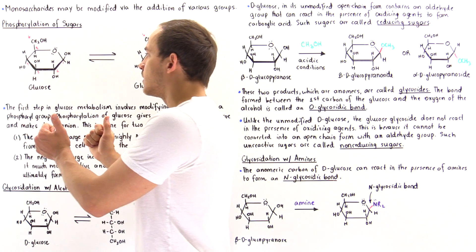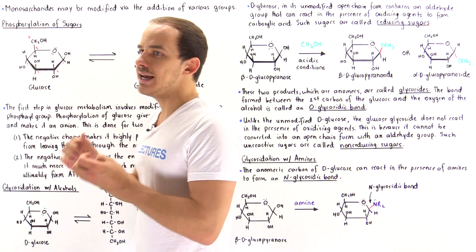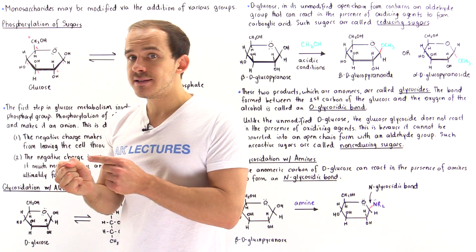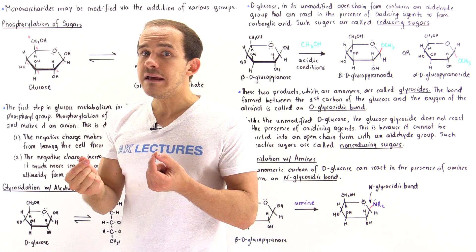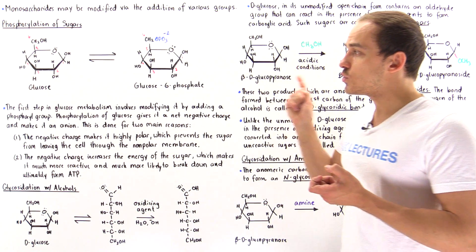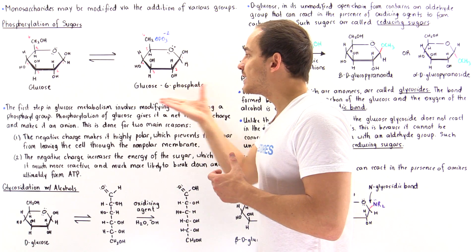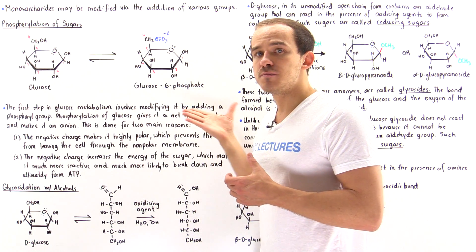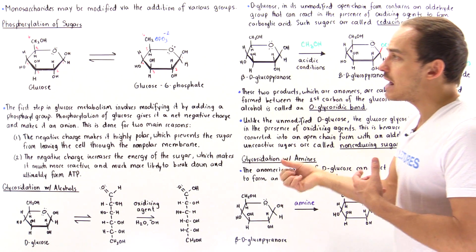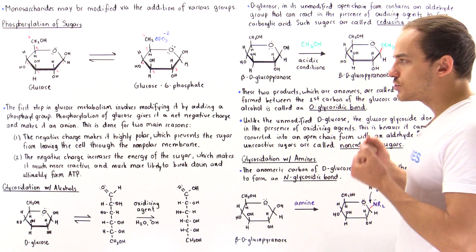Compared to the glucose molecule, which has a net charge of 0, glucose 6-phosphate has a net negative charge. Whenever a system in nature contains charge, its energy is higher — it's less stable and more reactive. So by phosphorylating glucose and transforming it into glucose 6-phosphate, our cells increase the reactivity of the glucose molecule, allowing it to undergo further processes and ultimately break down to form the ATP energy molecules that our cells use as the major energy source.